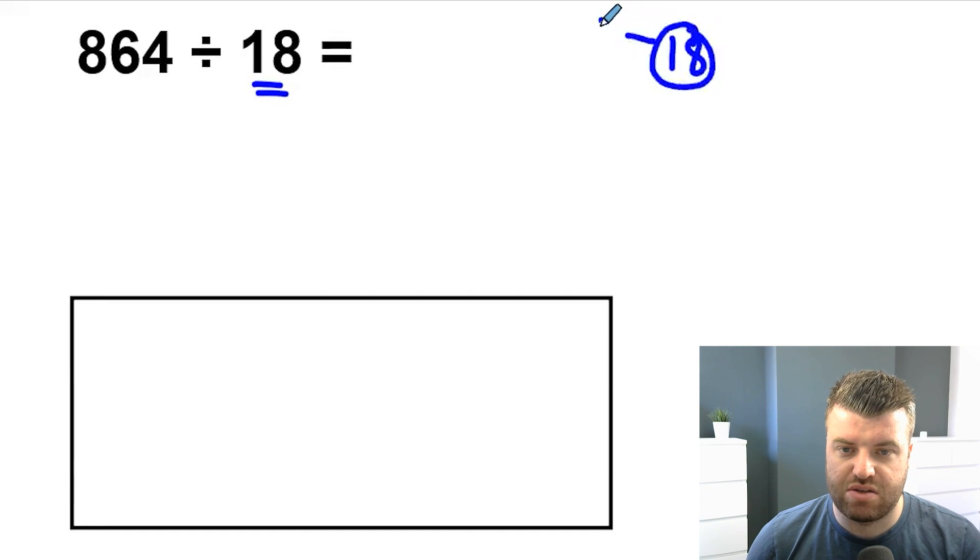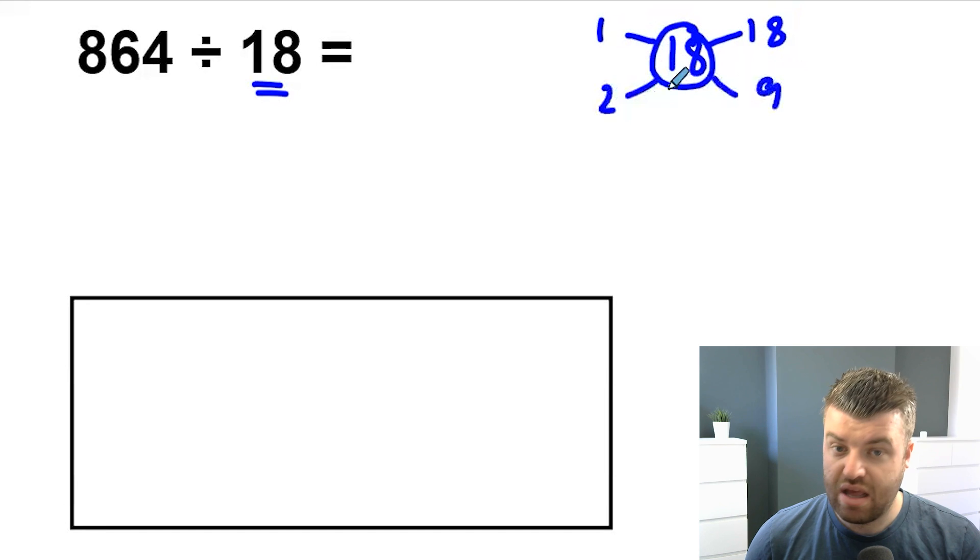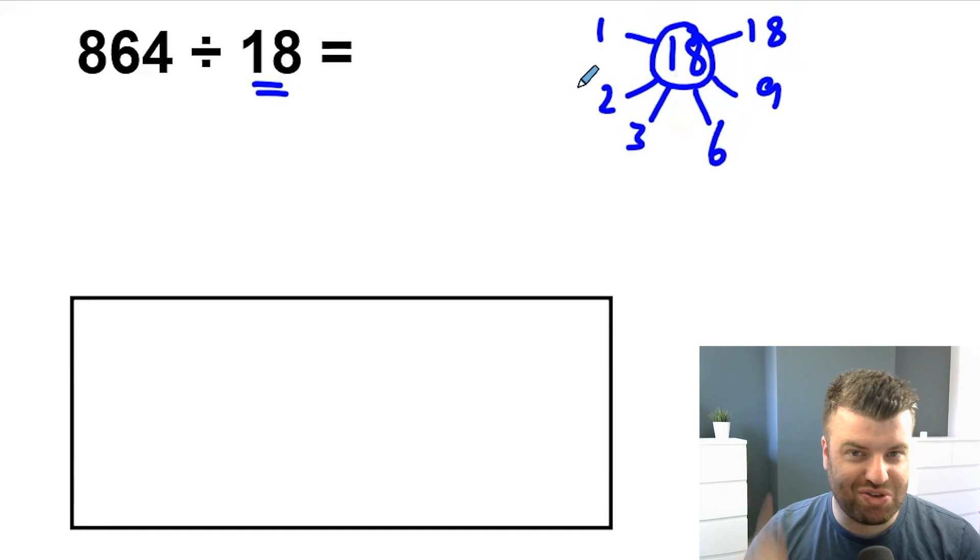18 has factors. 1 and 18 is the first factor pair. They multiply together to give you the product 18. We also have 2 and 9 and we also have 3 and 6. Now here's what we're going to do. We're going to swap the 18 out for a factor pair.